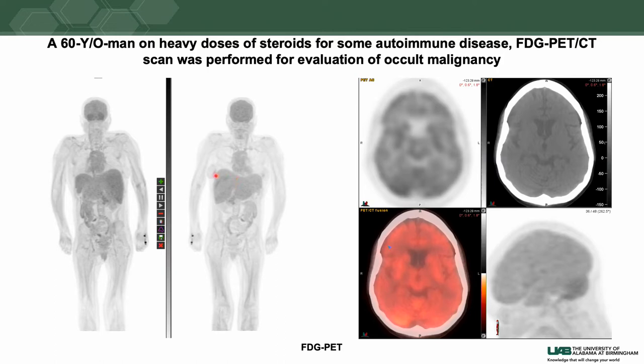As you can also see in the axial slices, there are no abnormalities on the low-dose CT, but the cerebral cortical uptake is even lower than the cerebellum and the entire cerebral cortical uptake is decreased. We attributed this diffusely decreased cerebral metabolism to the heavy dose of steroids in this patient.